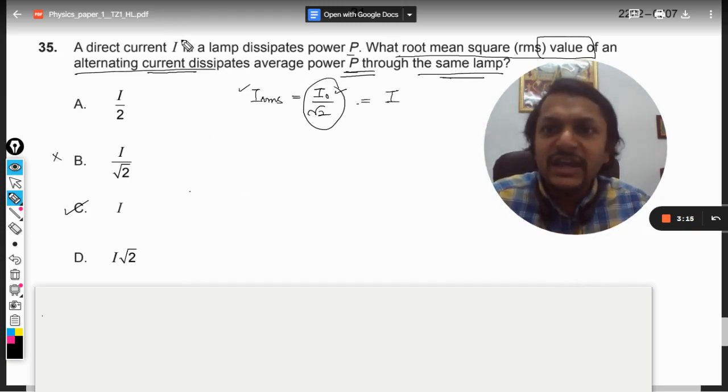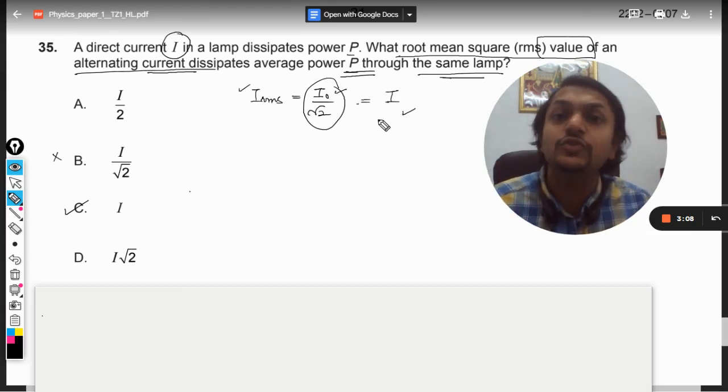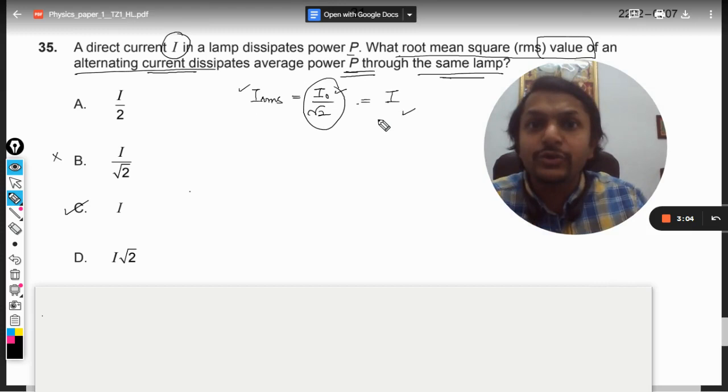So in first case, it is I. In the second case, whatever is the peak value, whatever is the RMS value, this value must be equal to the previous value of the current so that the power output is same.